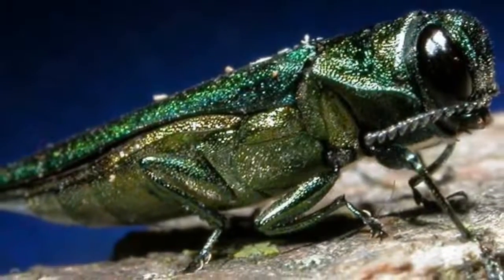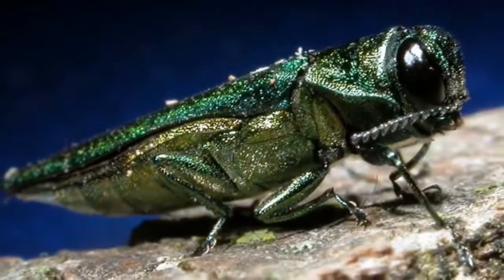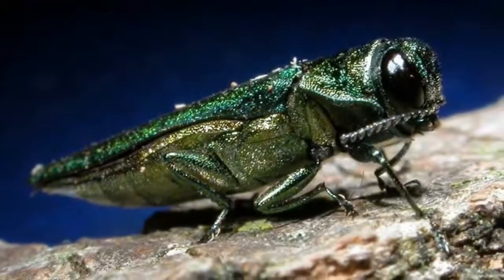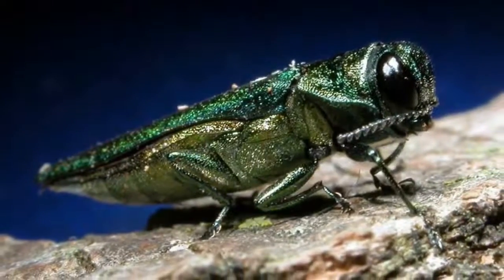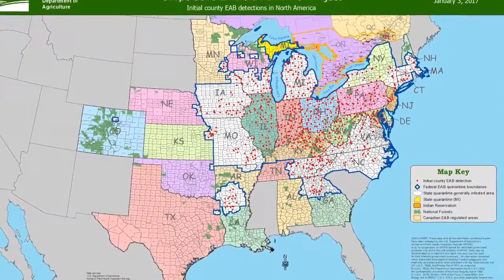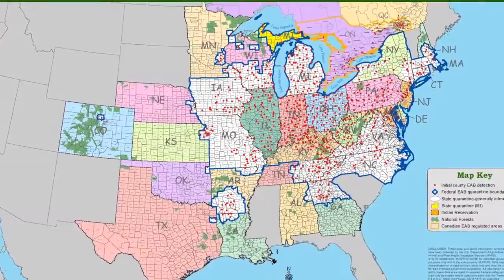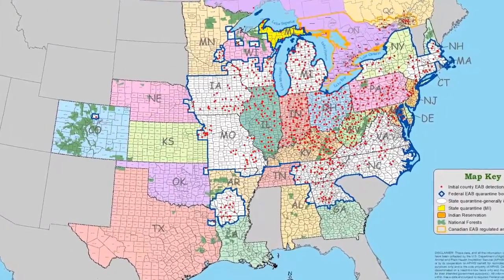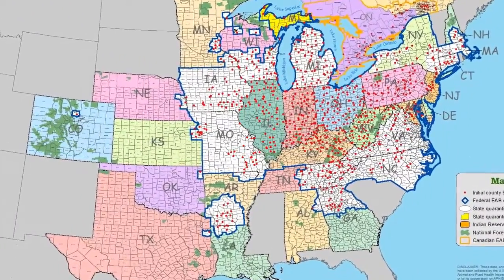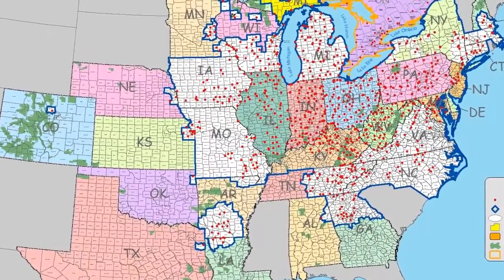The emerald ash borer is a destructive invasive beetle that began its journey across the US in 2002, when the insect was accidentally transported into Michigan. Originally from Northeast Asia, including Korea, China, Japan, and Russia, this wood-boring pest has destroyed millions of ash trees and spread to 31 states as well as Quebec and Ontario in Canada.